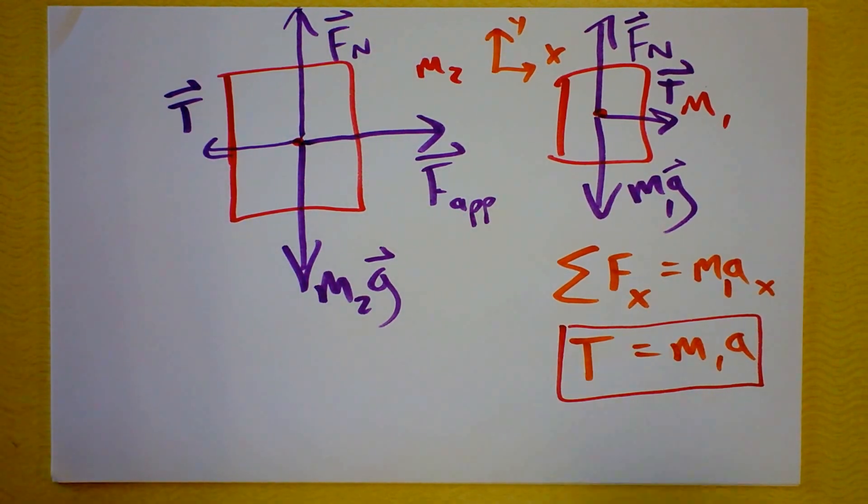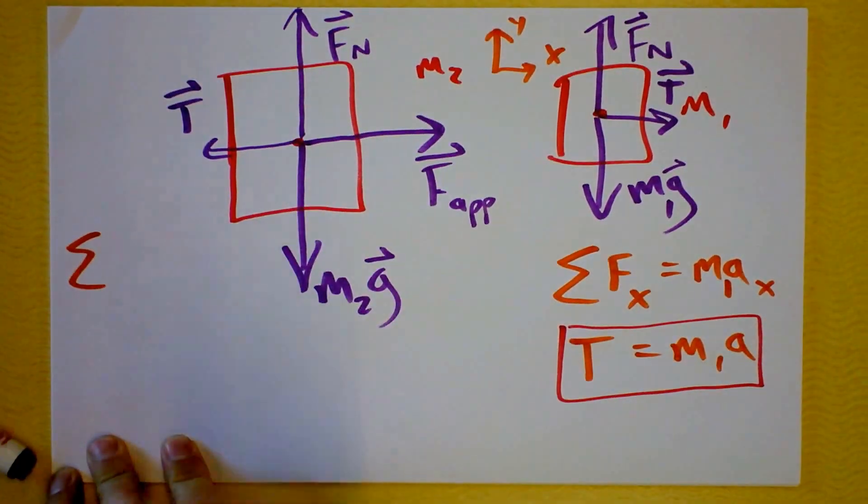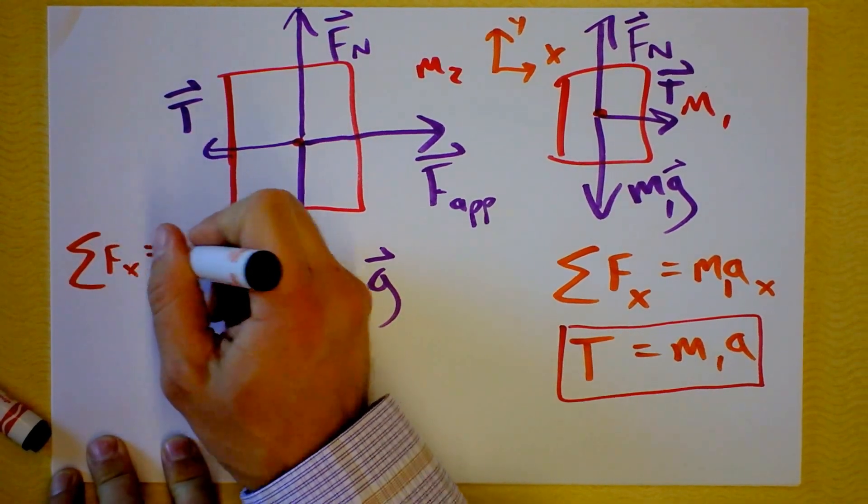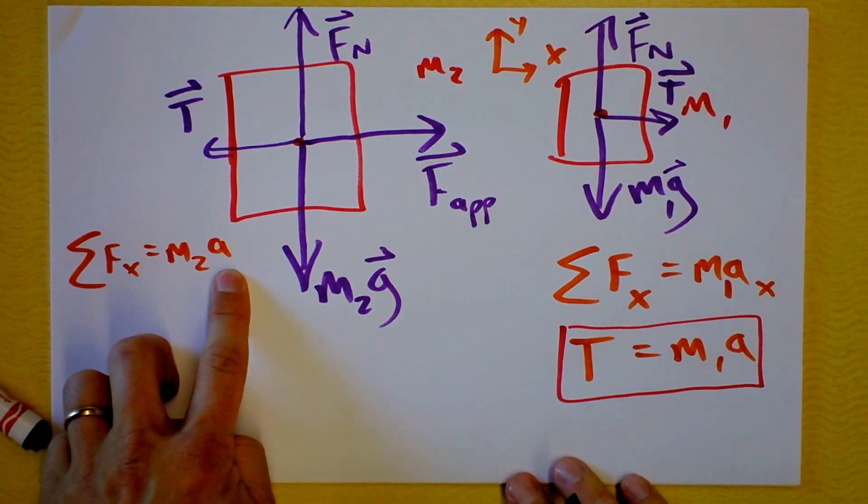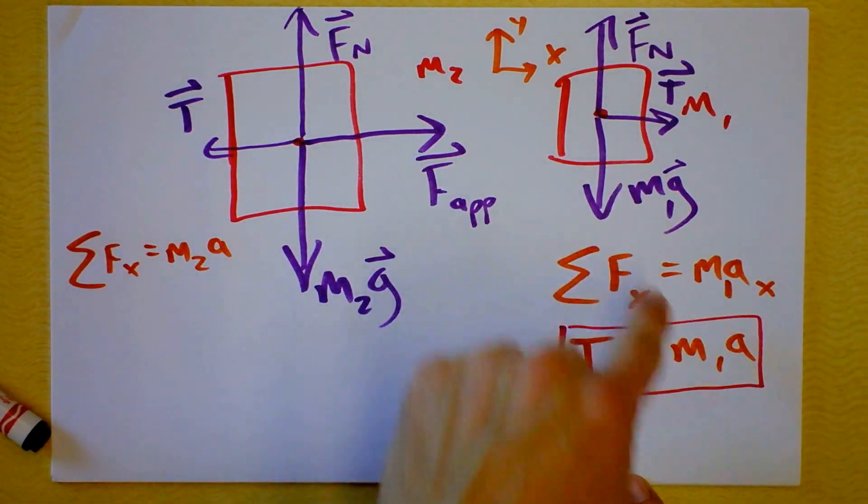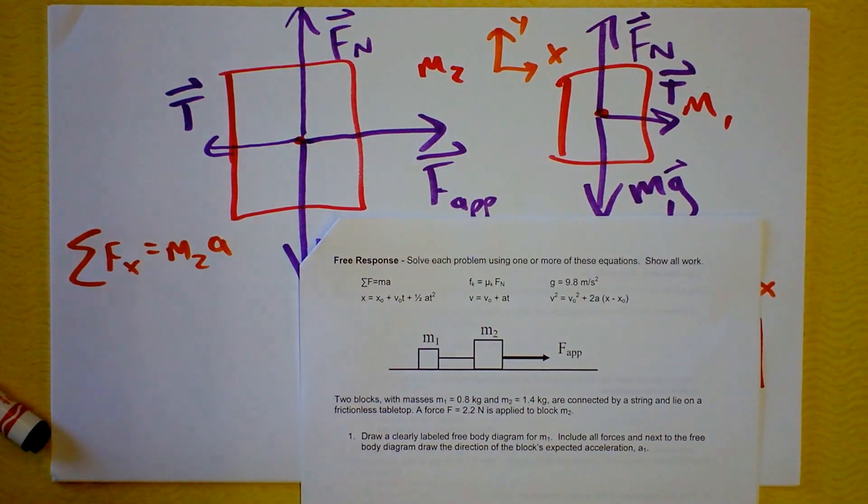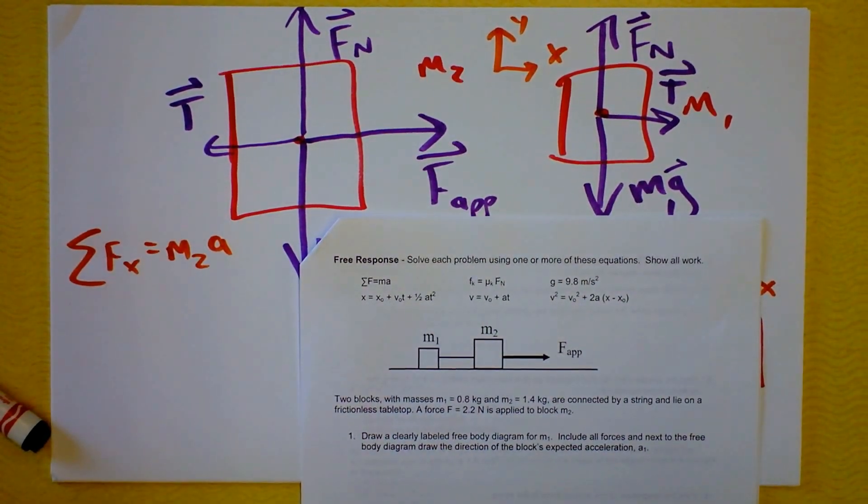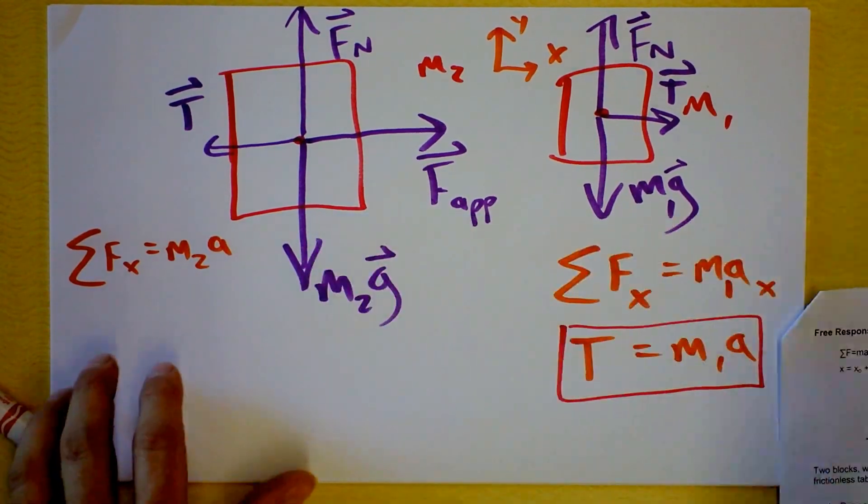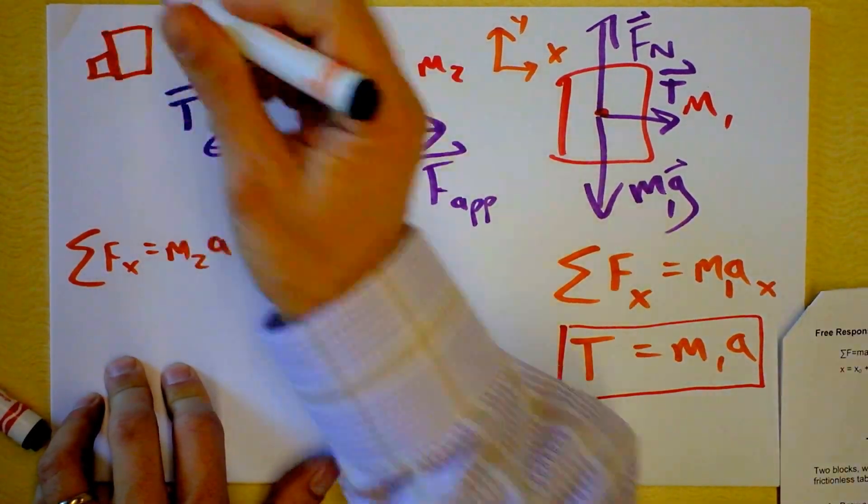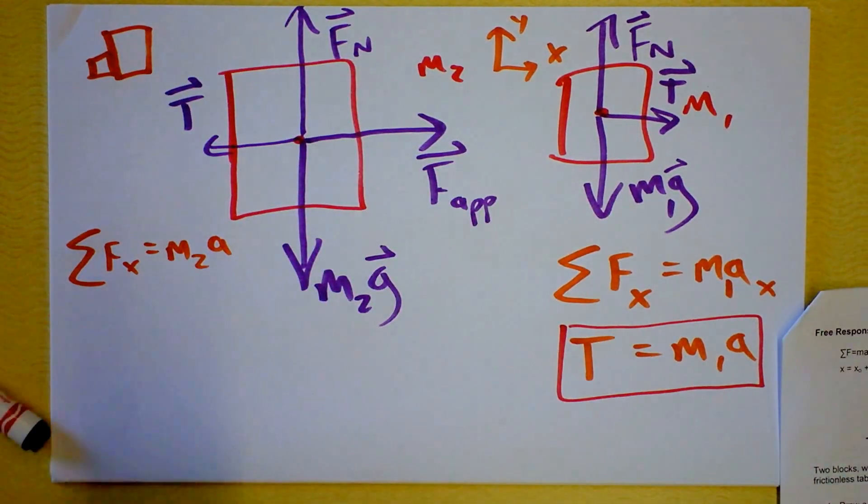Then we go over here and we say we can use Newton's second law on this box also. We can say the net force in the x direction is m2 times the acceleration. But look, this is the acceleration of box two and this is the acceleration of box one. But they're attached with a string that doesn't stretch. How do the accelerations relate? It's going to be the same. The boxes are tied together. You might also have a situation in which two boxes are pushed and they're smashed into each other. In that case also, the accelerations for the two boxes would be the same.